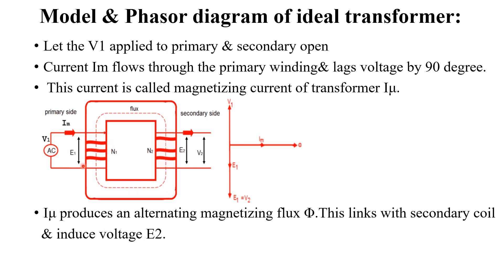Alternating flux will be induced in the primary winding, so that an EMF will be induced across this primary winding. The same flux will flow through the core of the transformer and through the secondary winding as well. Due to this, an EMF will be induced across the secondary side of the transformer. The applied voltage is alternating, and the current flowing through this primary winding will be IM — it is normally considered as the magnetizing component of the current. Due to the flow of IM, the flux will set up in the core.